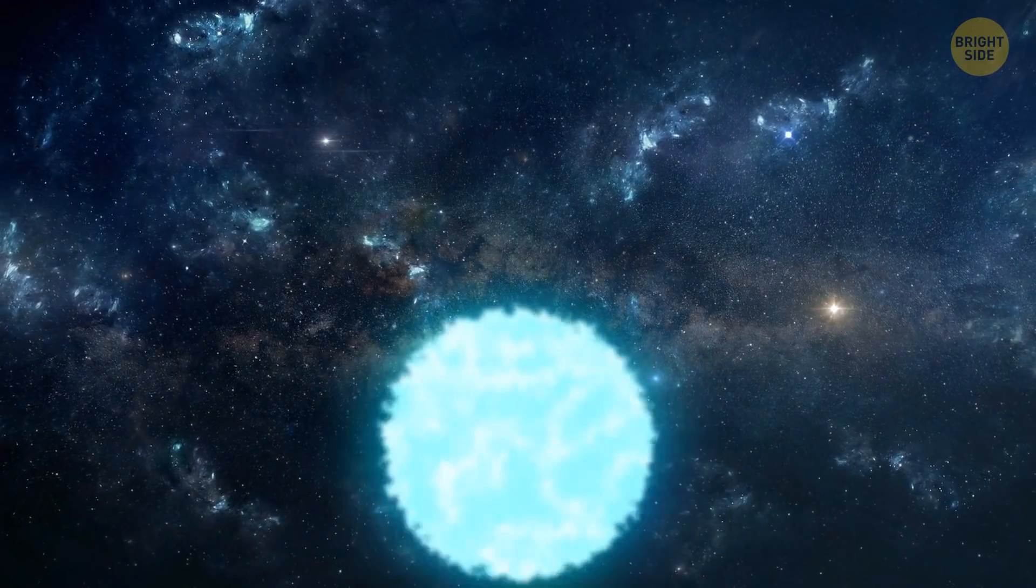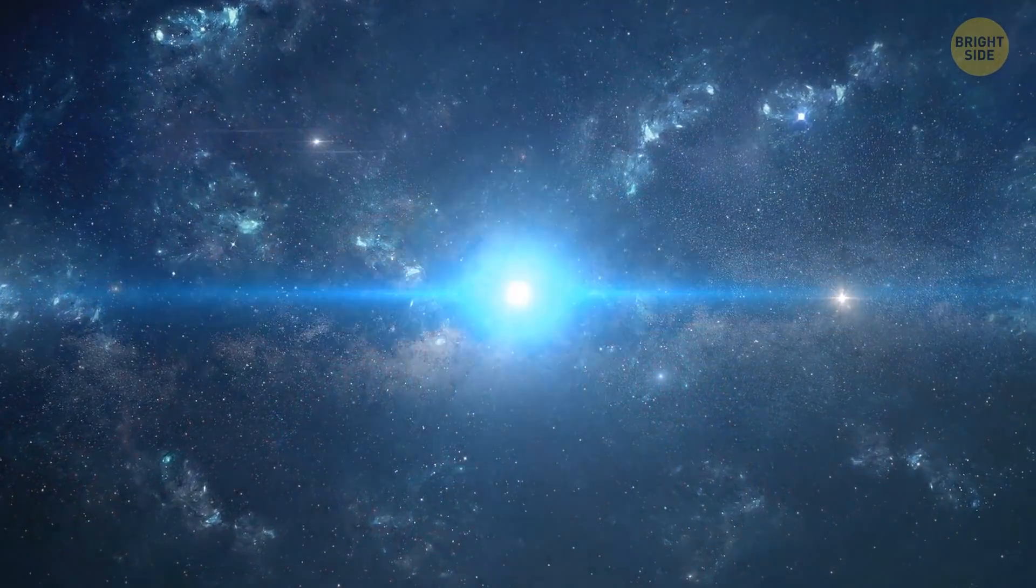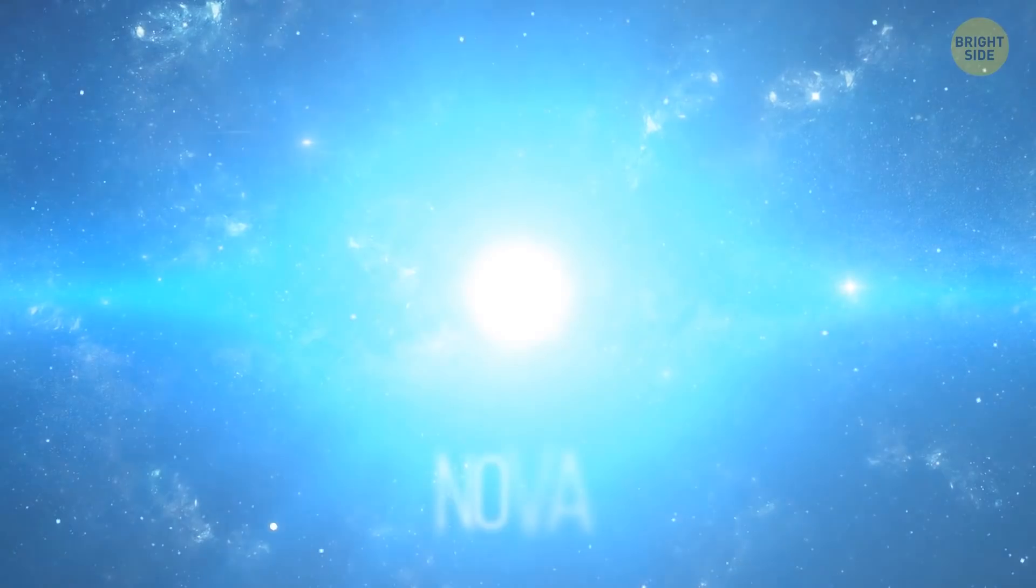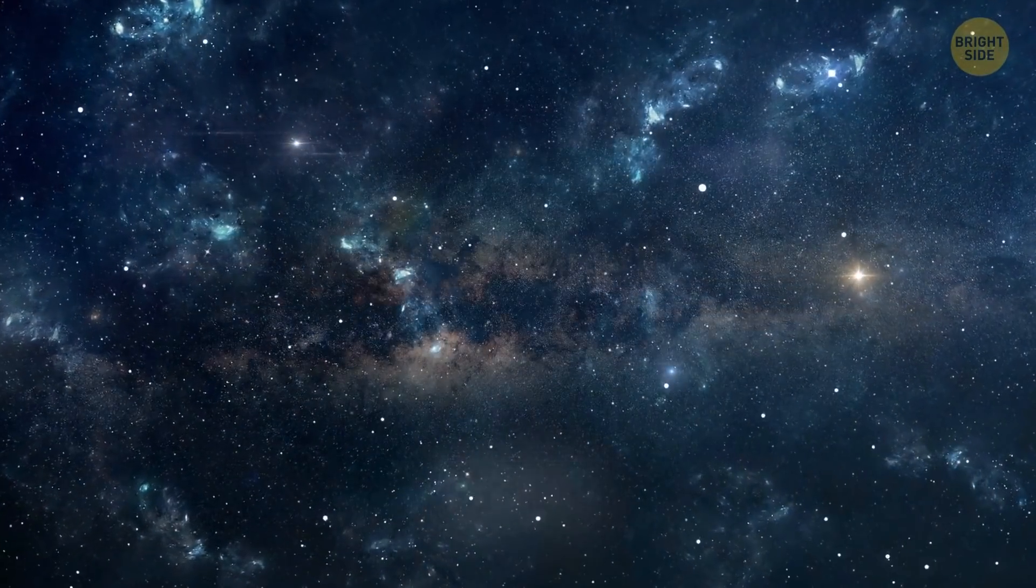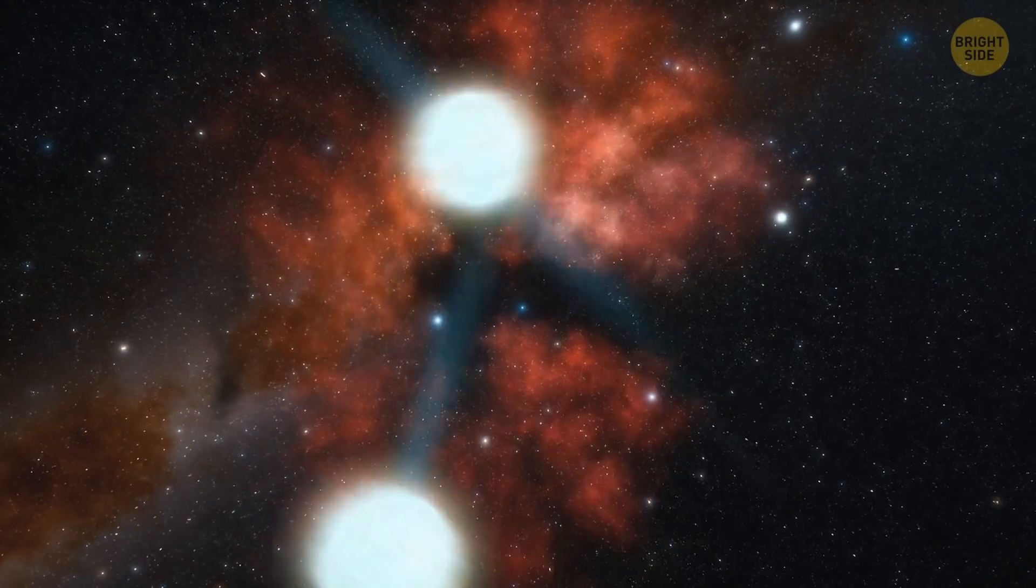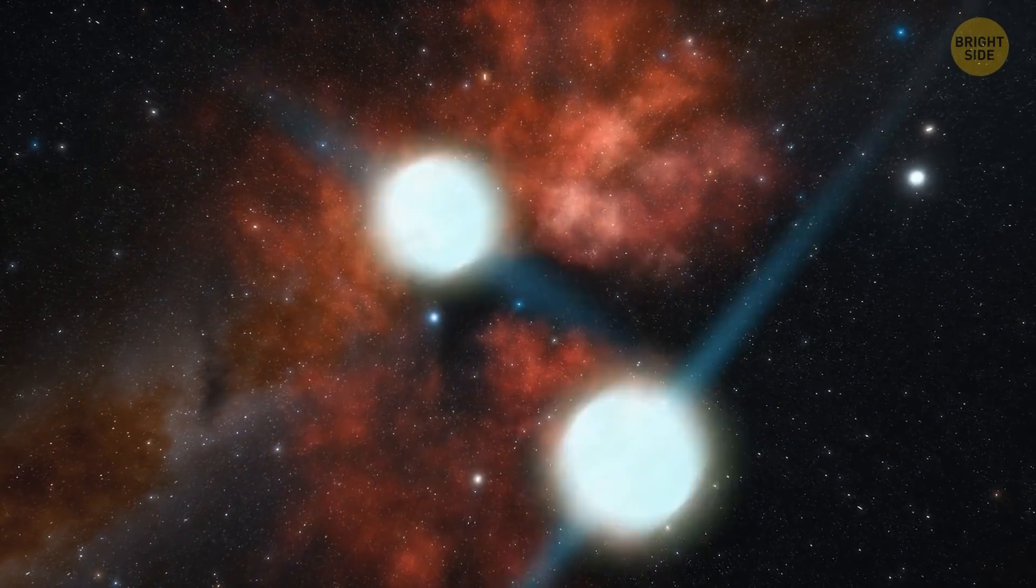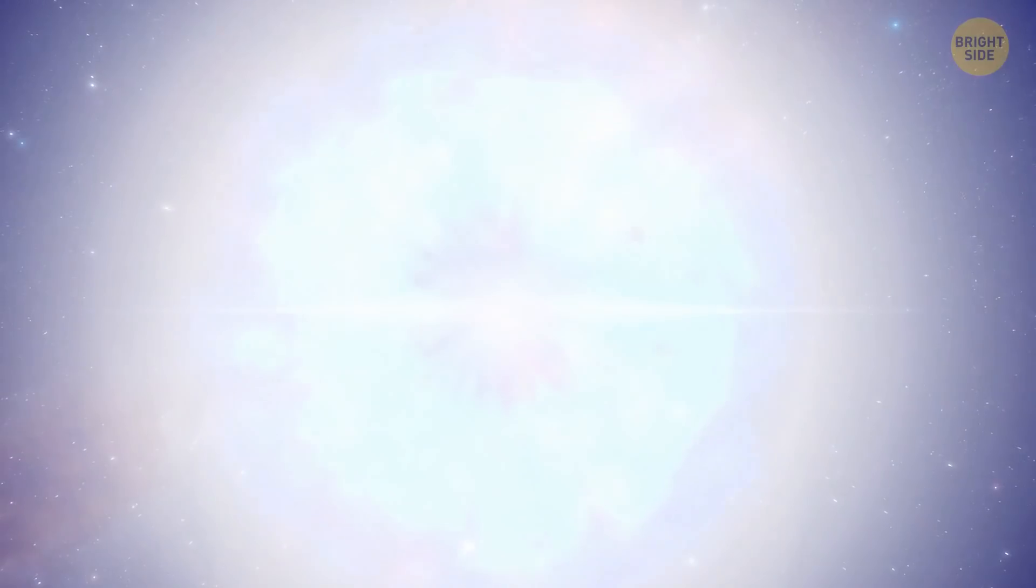It usually takes a white dwarf over a billion years to cool down. Under certain conditions, such a star can erupt. And this event is called a nova. It's way less bright than a supernova, or even a kilonova, which occurs when two neutron stars, or a neutron star in a black hole, merge into each other.